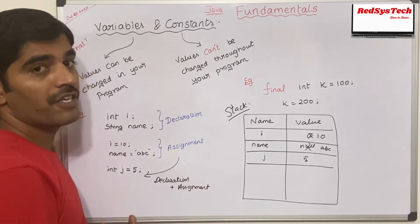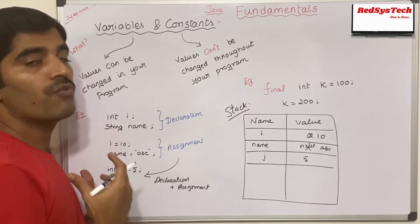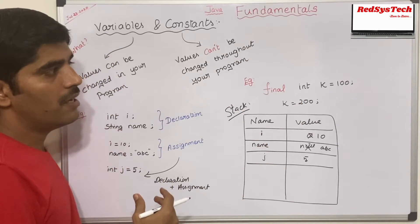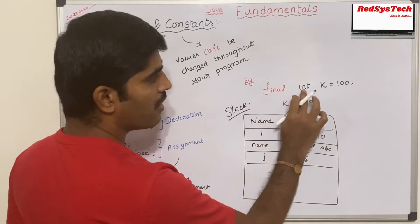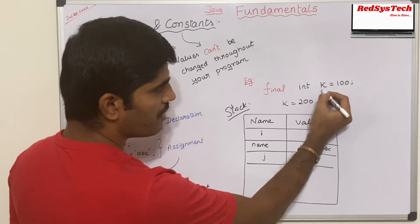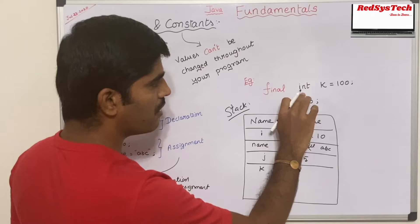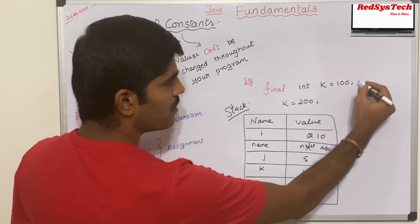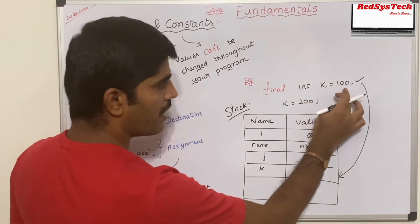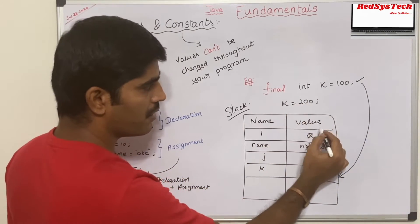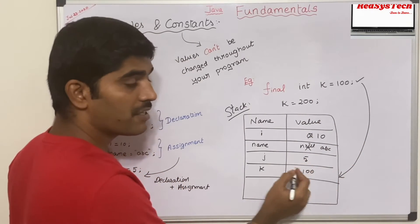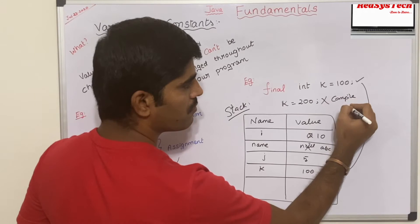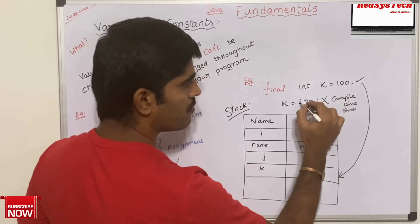Now let's see how constants can be achieved in Java. A constant is a value which we don't want to change throughout our program. With the help of the keyword `final` — a reserved keyword — we can make a variable a constant. If I say `final int k = 100`, then `k` is the variable name of type `int` declared as `final`, assigned the value 100. Now if I say `k = 200`, when it tries to change the value from 100 to 200, it is not going to allow it because we made it `final`. This line is going to throw a compile error and will not execute.